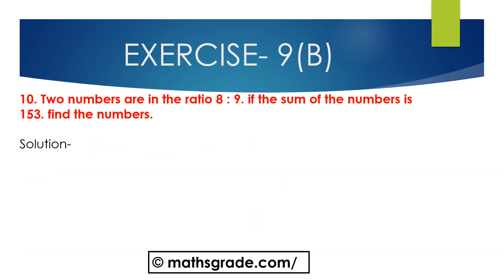Now we will solve Question 10: Two numbers are in the ratio 8:9. If the sum of the numbers is 153, find the numbers. The sum is 153 and the ratio is 8:9. The total ratio will be 8 + 9 = 17.